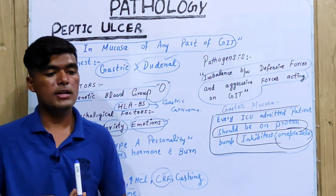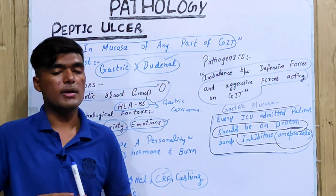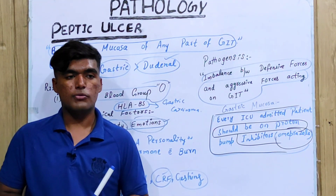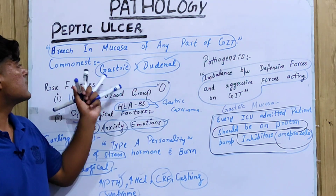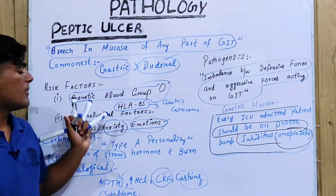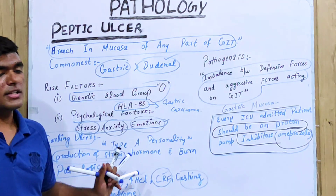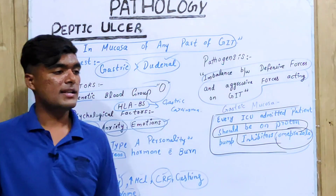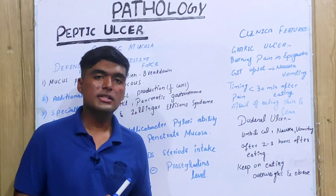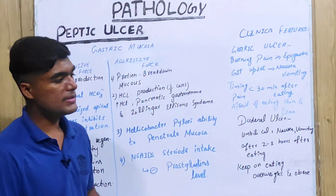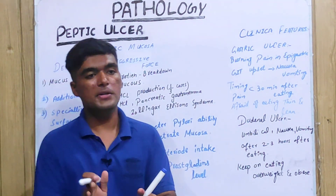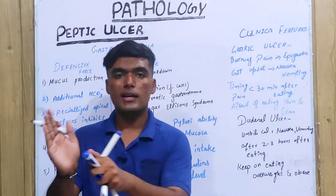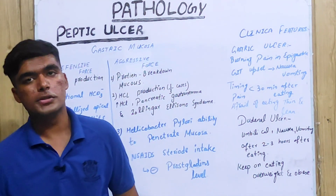To briefly recap the main points discussed so far: what peptic ulcer actually is, what the commonest risk factors are, the pathogenesis, and the types. As discussed, the pathogenesis is an imbalance between defensive forces and aggressive forces.